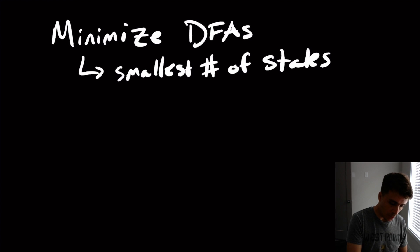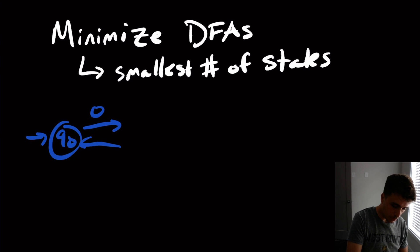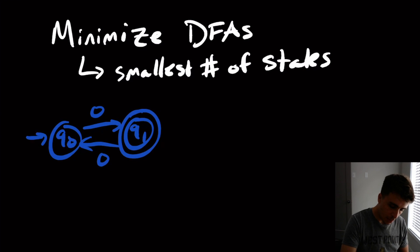So for example, if we have this DFA right here, Q0 with two states on it. So this recognizes all odd length strings which just have zeros in them. So it recognizes one zero or three zeros or five zeros, etc. And you can show that this is the smallest possible.